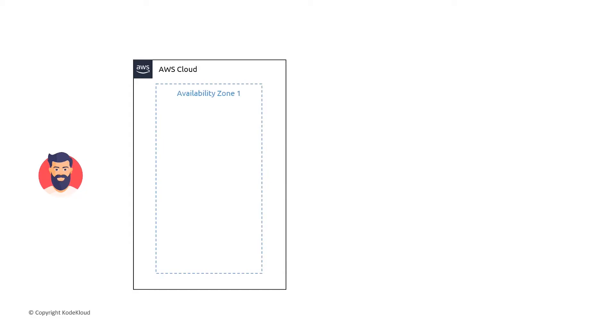Before the days of having a managed database service, the way that you would provision a database was: first, you would have to grab a server of some kind — most likely a virtual machine. So if you're already integrated into the AWS world, you could provision an EC2 instance to host your database. After provisioning the EC2 instance, you'd then have to set it up so that it'll actually run your database, which involves a couple of different steps.